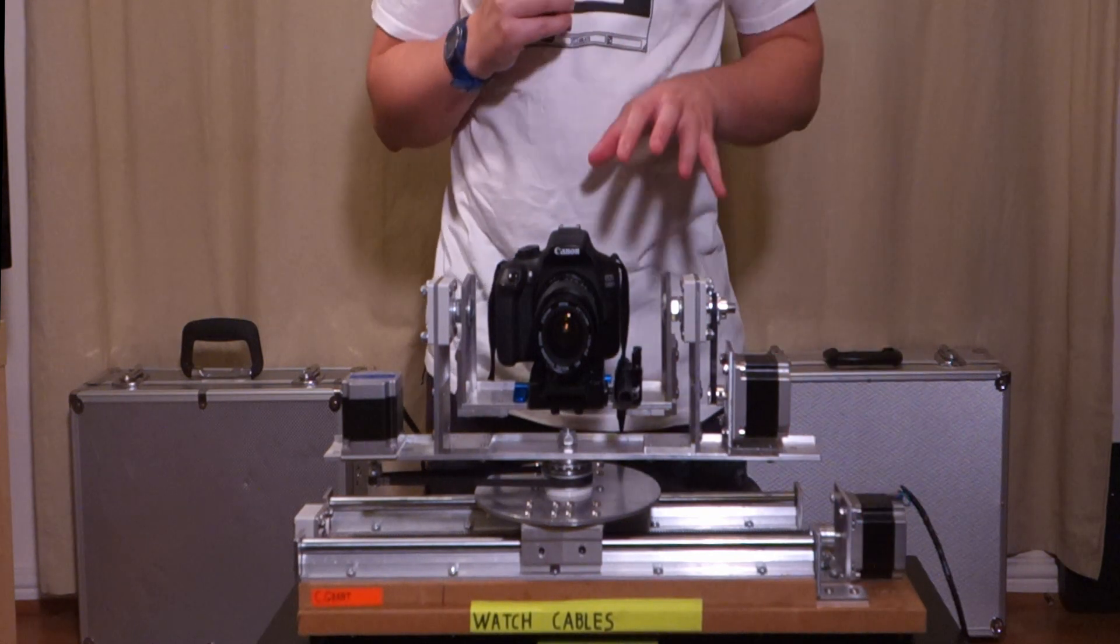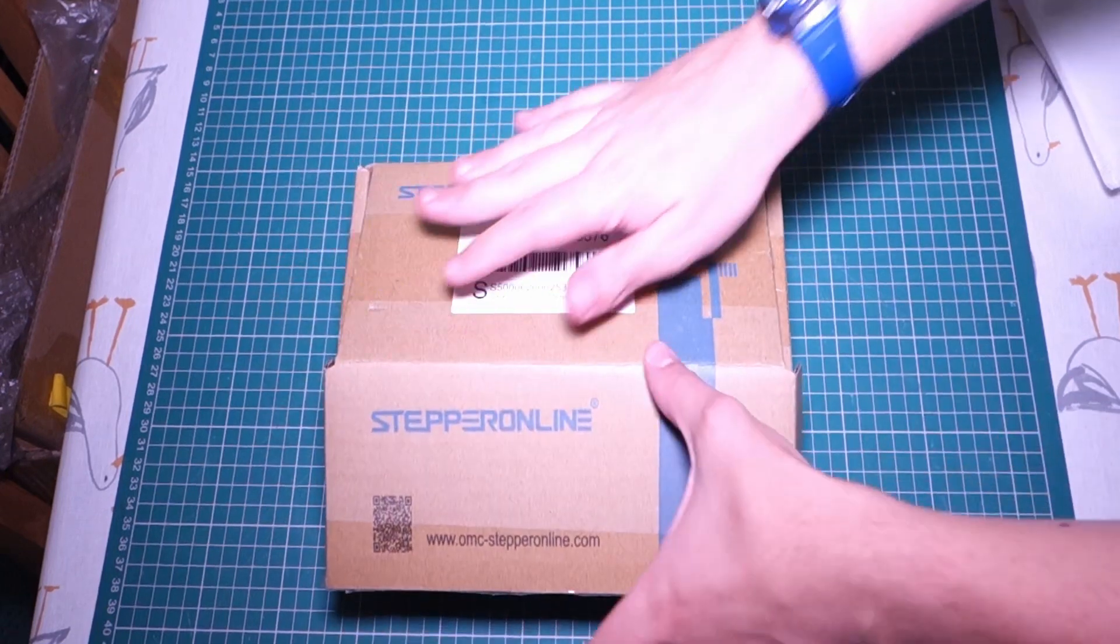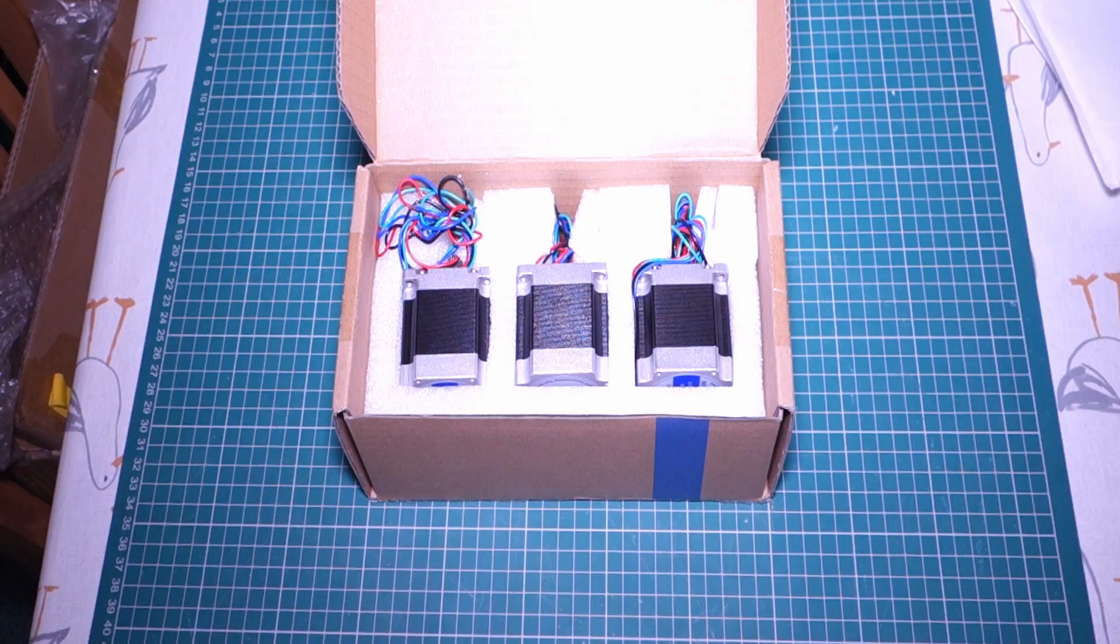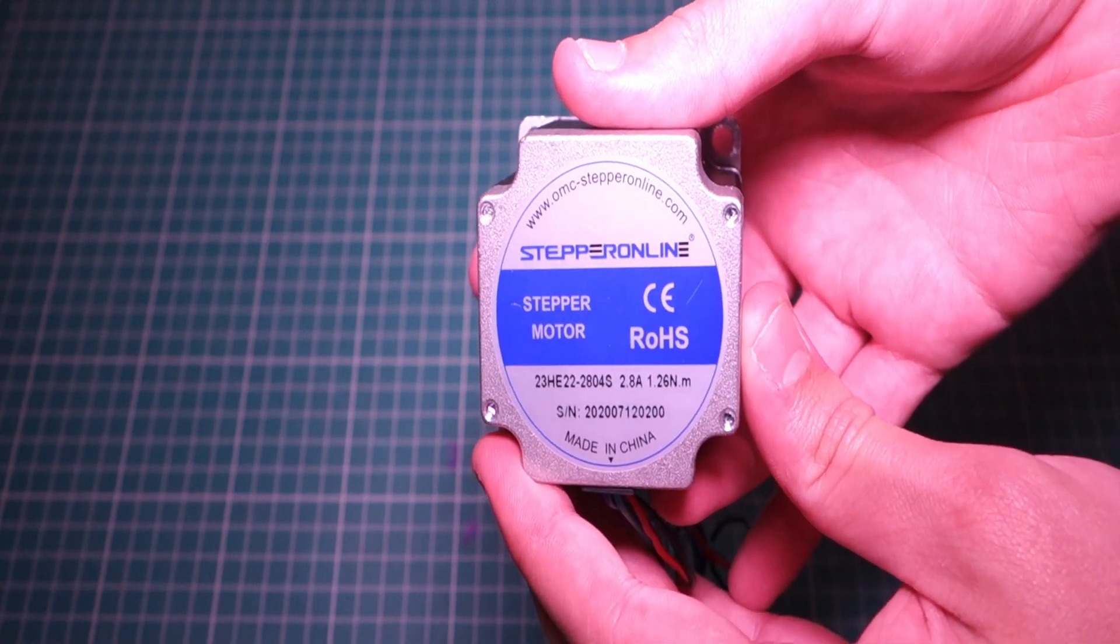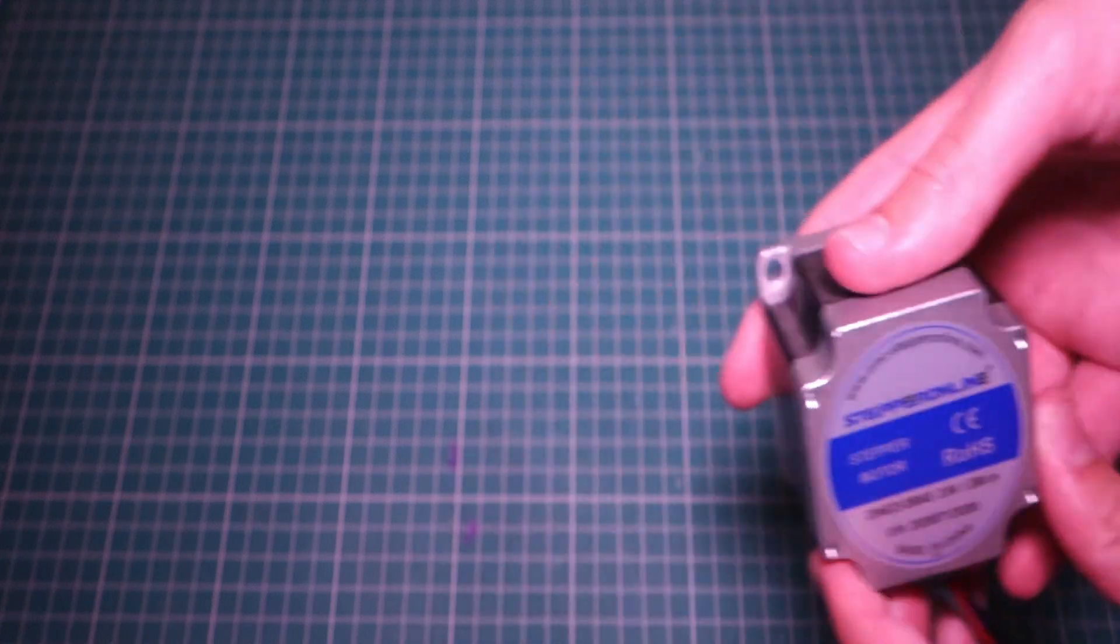I'm using three stepper motors to keep things simple. Stepper motors are really really precise and when you want to move the camera very slightly per frame as you're animating along, the precision is what you're after not necessarily the speed.